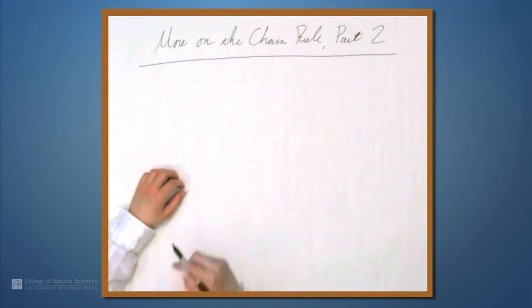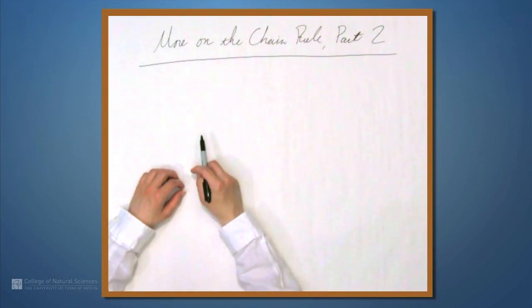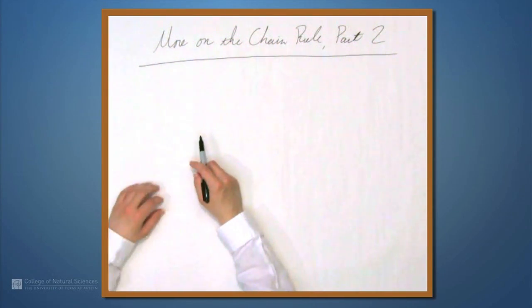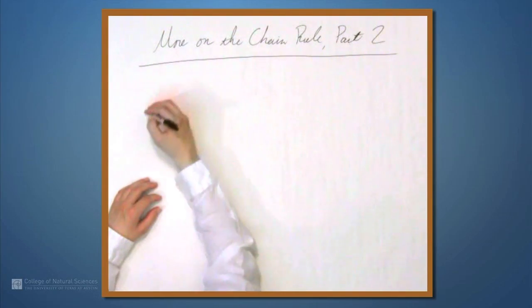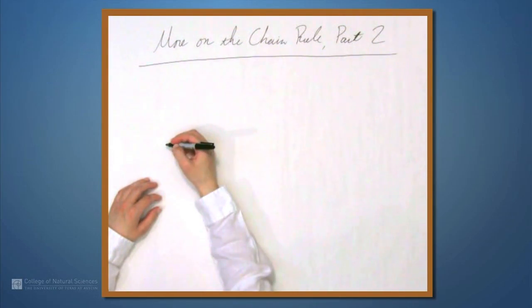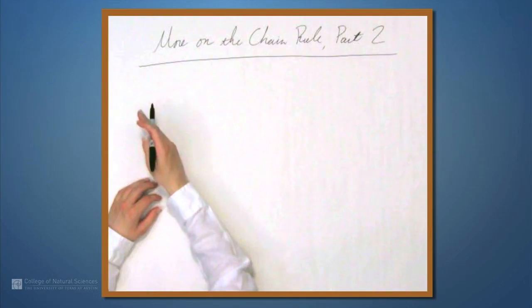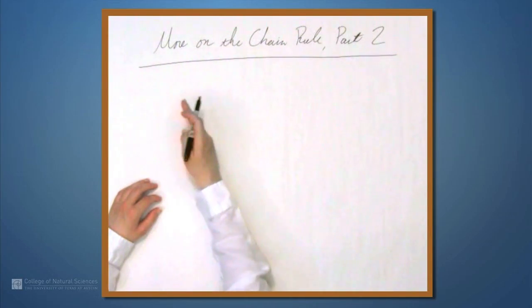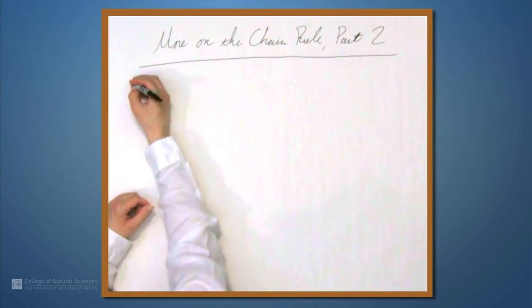We're here at the example table, and in this video we're going to do some more on the chain rule. In the previous video, we looked at the chain rule applied to multiple functions f, and we're going to continue that here.